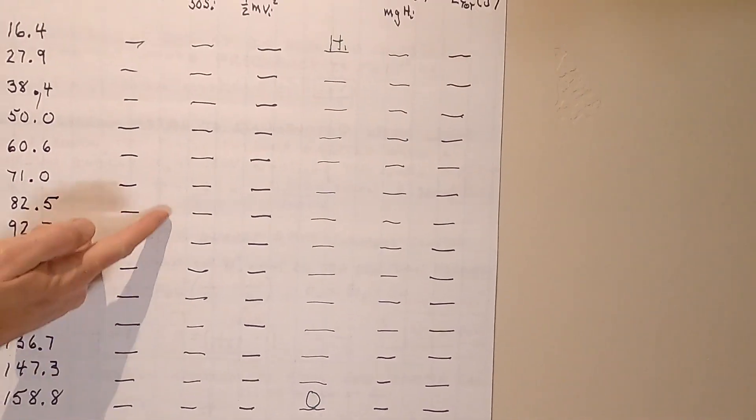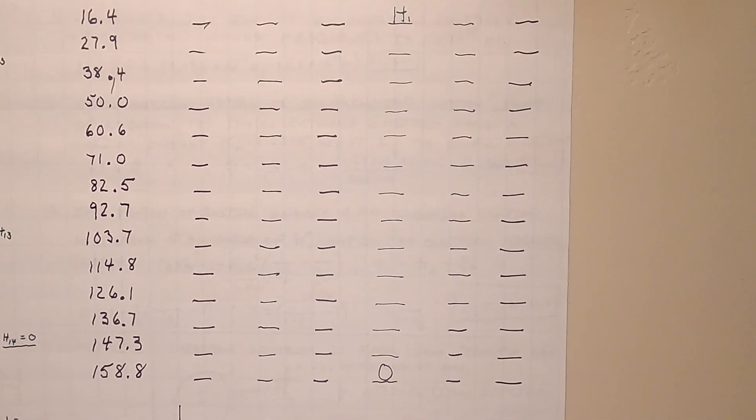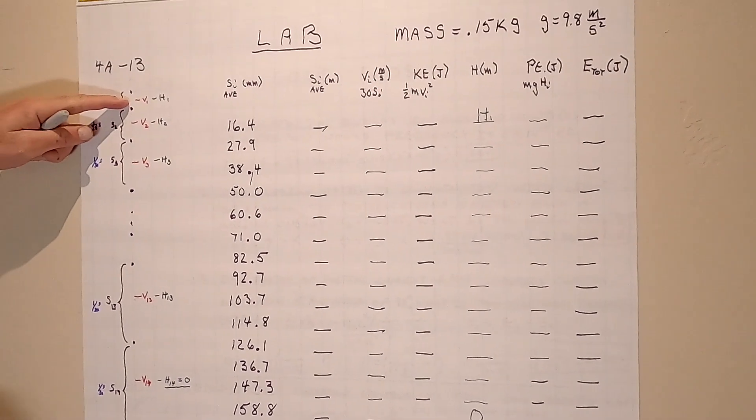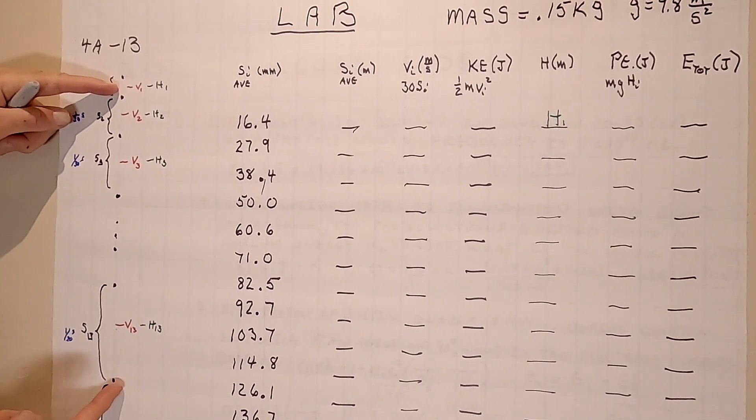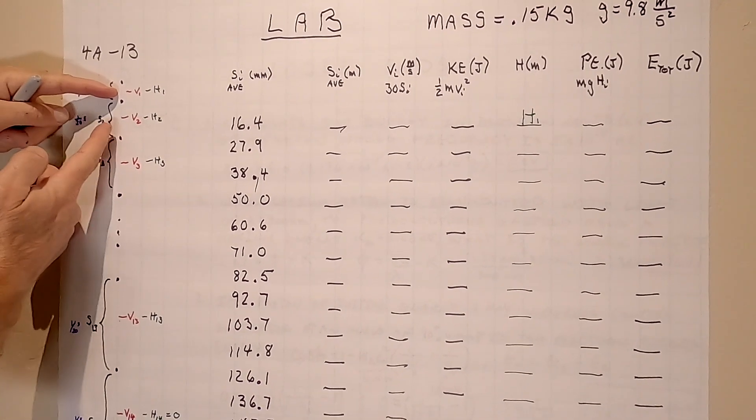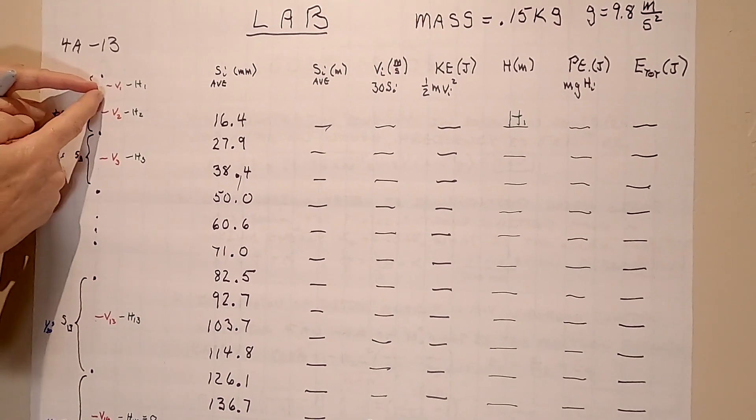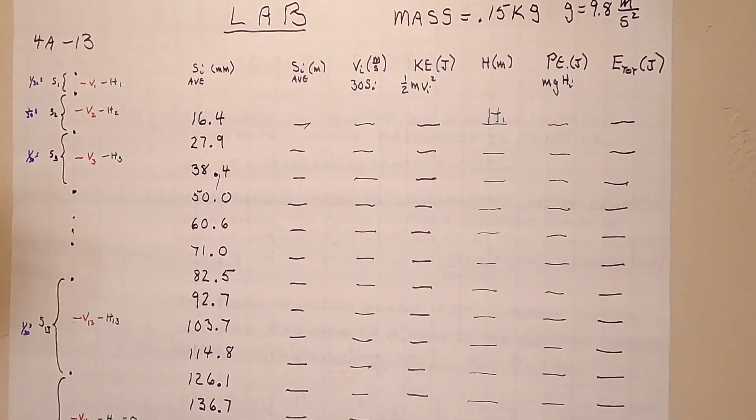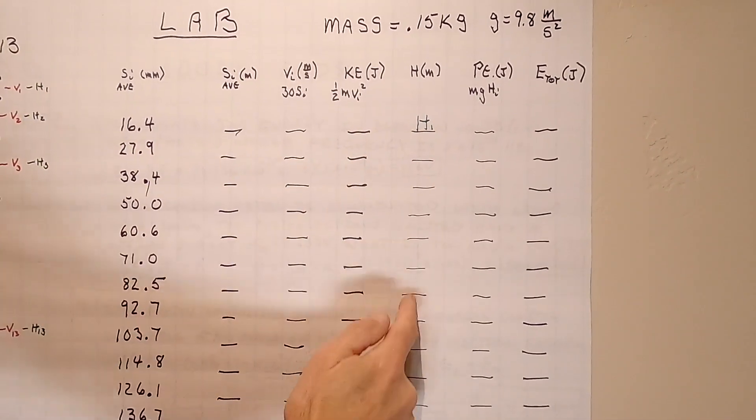And then the very last one up here, this h1, would be half of 14, all of 13, 12, 11, 10, 9, 8, 7, 6, 5, 4, 3, 2, and half of s1. That would be the last one right up there. Okay, so now we have a column of all the heights.